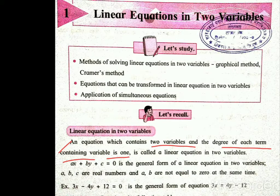Kone tahhi alphabet aapan ithe use karu shakto, jasa ki p, q, r, s, t, u, v, w, x, y, z. Kone tahhi alphabet aapan as a variable ghe u shakto. Variable manje unknown terms — jachi value aapan find out karaavi lagte ki wa tidhileli naste.